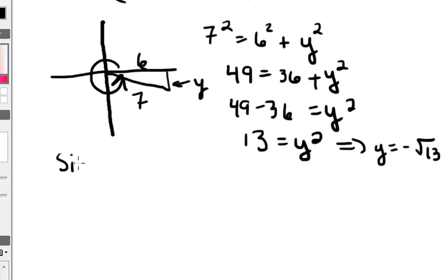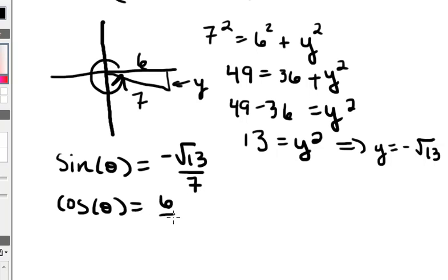So here, I get the sine of theta is equal to negative square root of 13 over 7. And I was given that the cosine of theta is equal to 6 over 7.